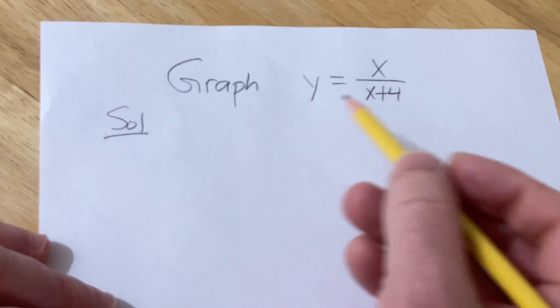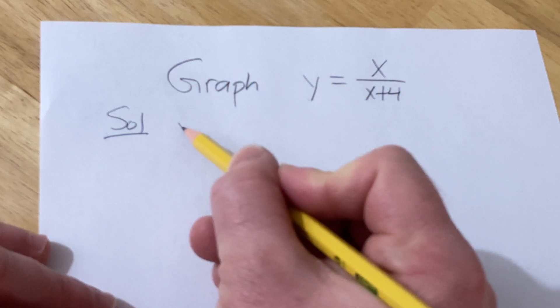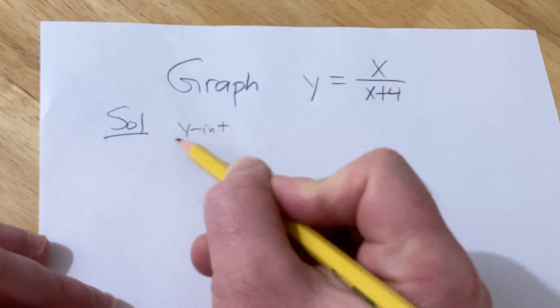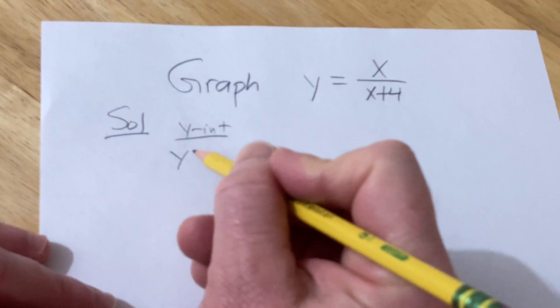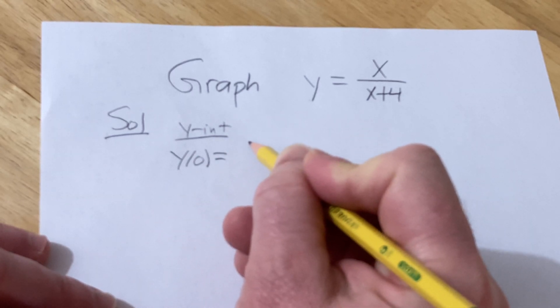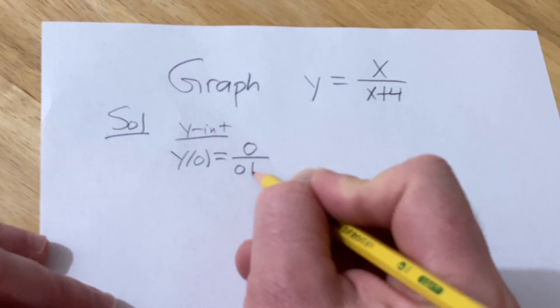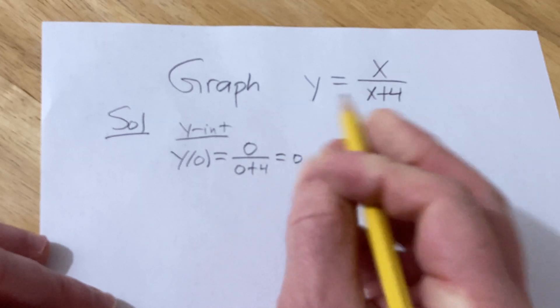Solution. So let's start by finding the intercepts. To find the y-intercept, you basically plug in 0 for x. So y of 0 is 0 over 0 plus 4, which is 0. So you get 0, 0.